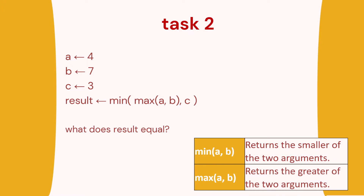Task two: we've got A which equals four, B equals seven, C equals three. The result is the minimum of C and that with a maximum of A and B — so what does that equal?